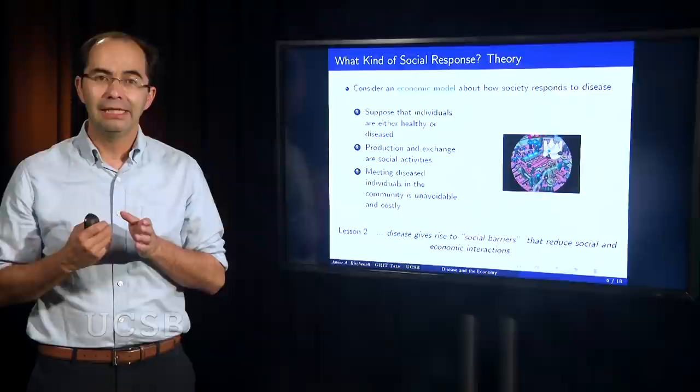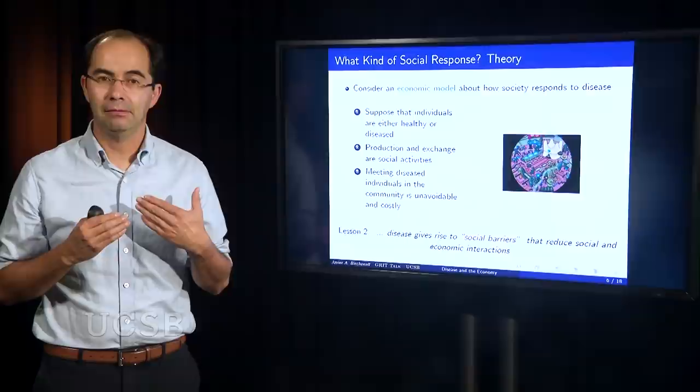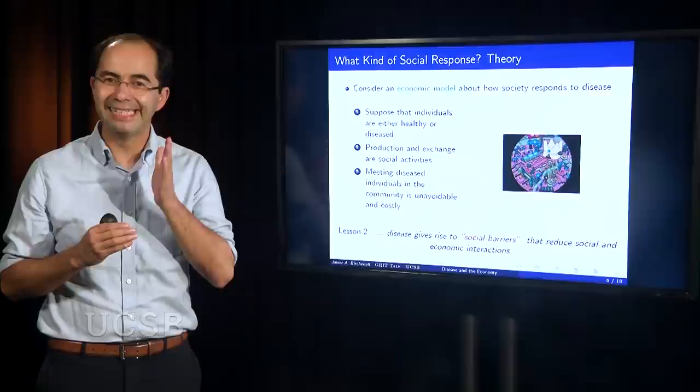And third, in a particular community, in a specific sense, we'll hopefully become clear a little later. Meeting unhealthy people, meeting diseased individuals, is unavoidable and is costly. With those three premises, with those three assumptions, people in my world, society in my world, responds to disease by creating some social barriers that essentially try to limit social and economic interactions.